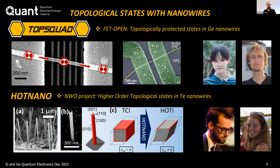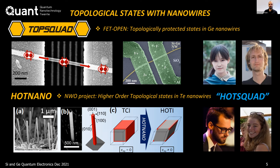I work on two material systems: a 1D system using germanium nanowires and a 2D system using planar silicon quantum dots. I'll give a summary of key results on both over the last five or six years. Currently running projects include a FET-Open project I coordinate on germanium nanowires targeting topologically protected states, and a new Dutch NWO project to create higher-order topological states in telluride nanowires — with four people on the nanowire team. All these nanowires are grown by our collaborators.